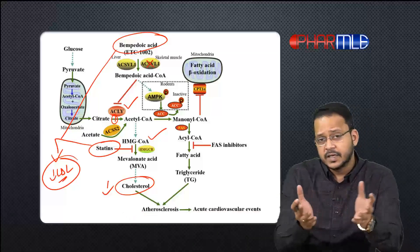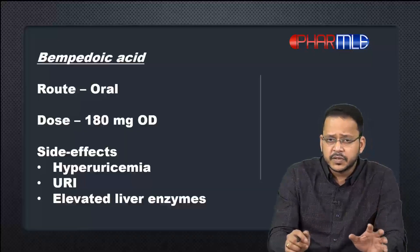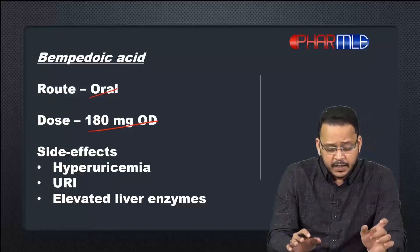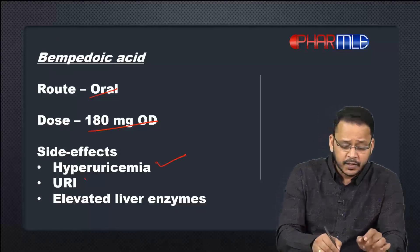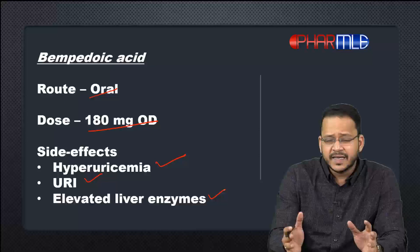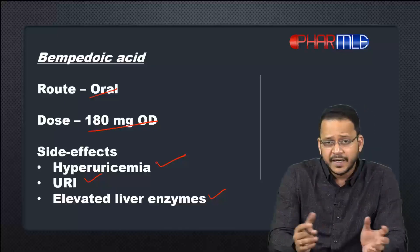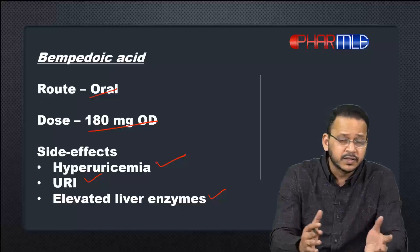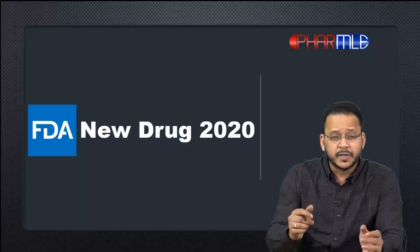Bempedoic acid is administered orally, just like statins, and is given once a day at 180 milligrams. Side effects include hyperuricemia, upper respiratory tract infection. It does not cause frank hepatotoxicity as such, but liver enzymes may be elevated, so we have to keep a watch. In cases where the patient already has liver cirrhosis or liver dysfunction, we have to consider carefully whether to start this drug or not.